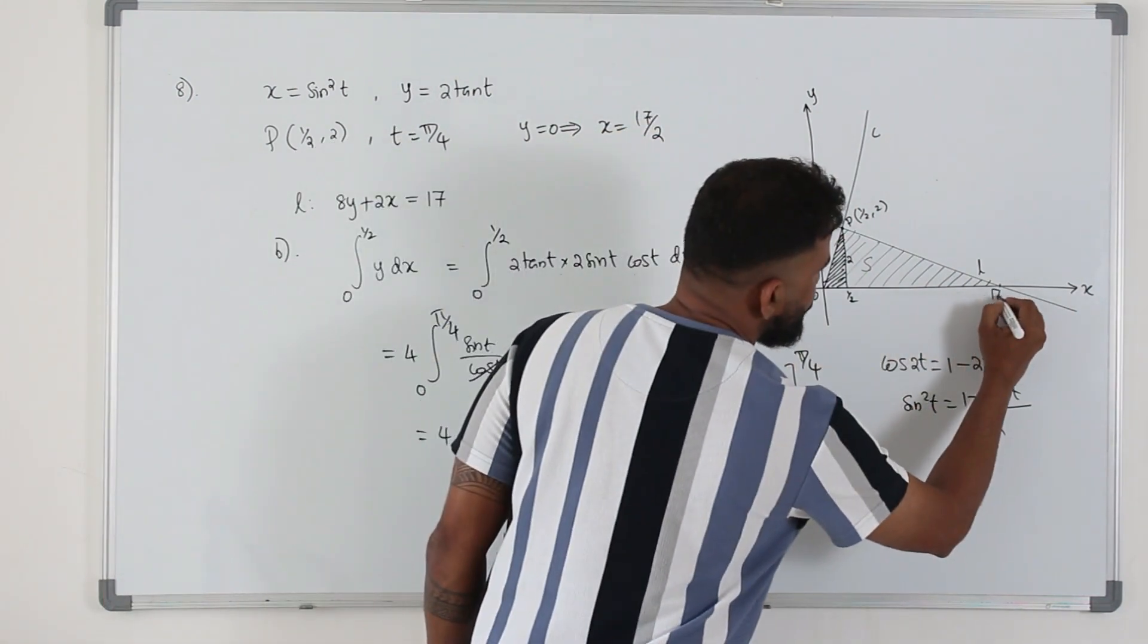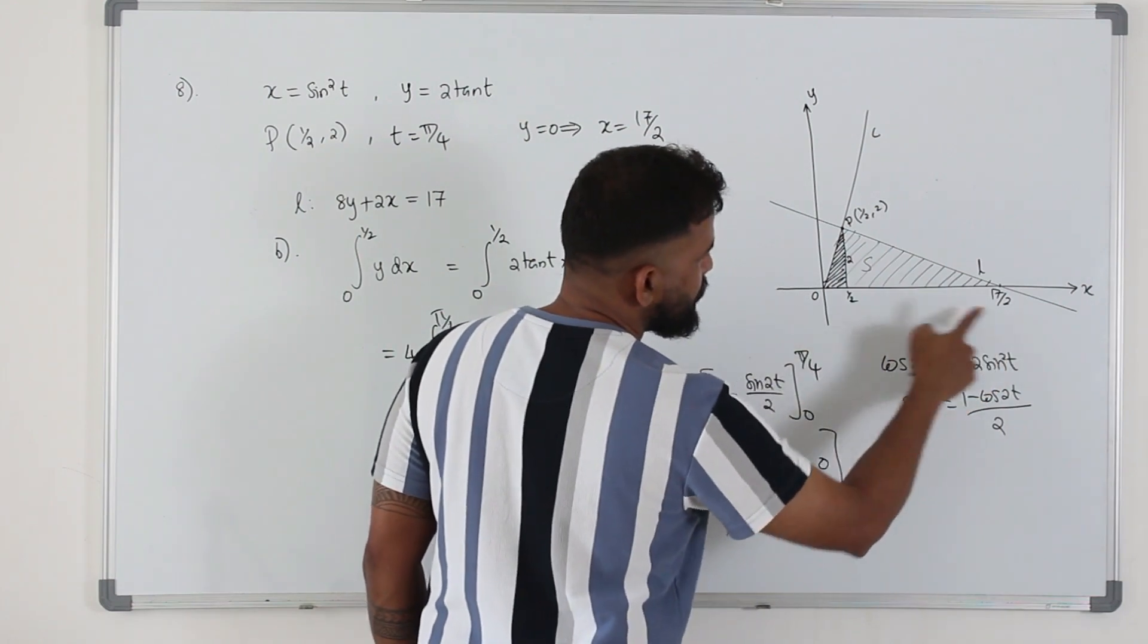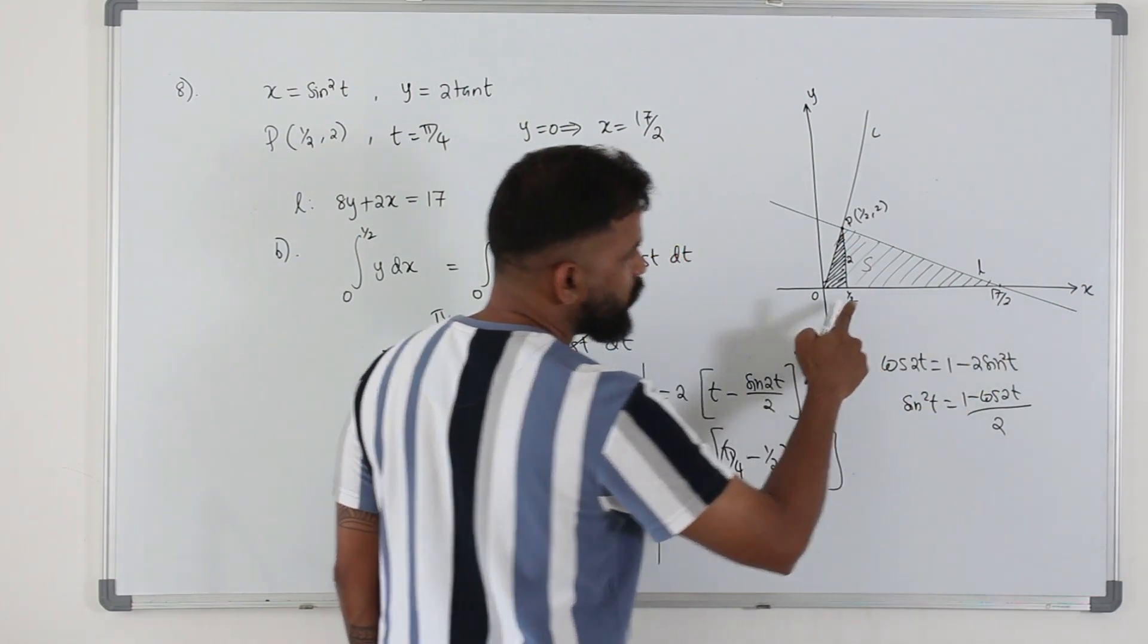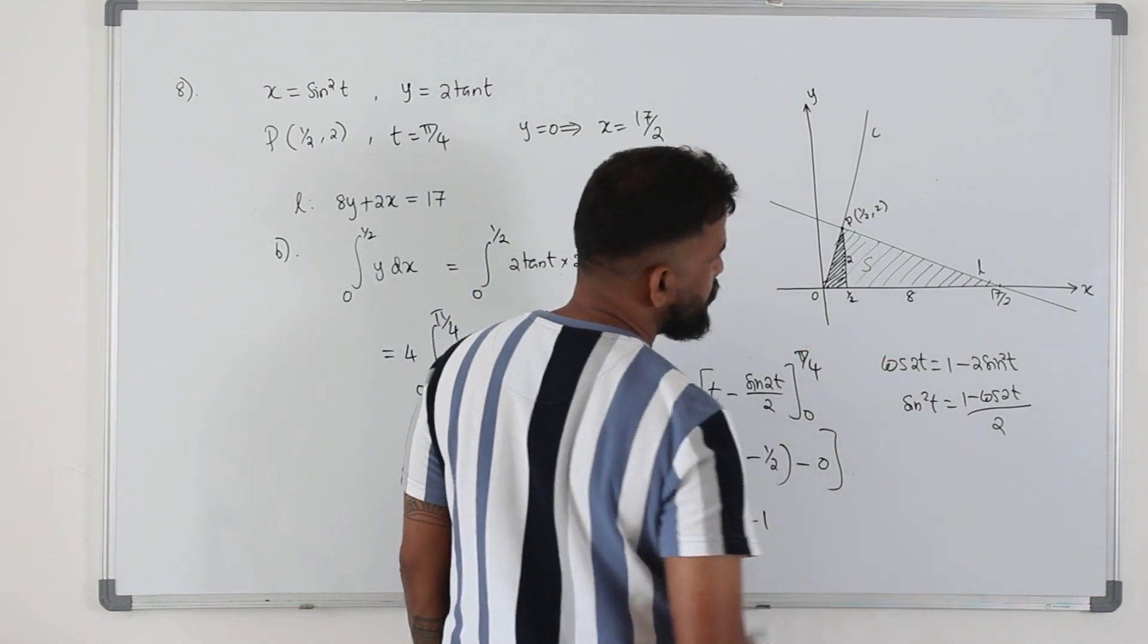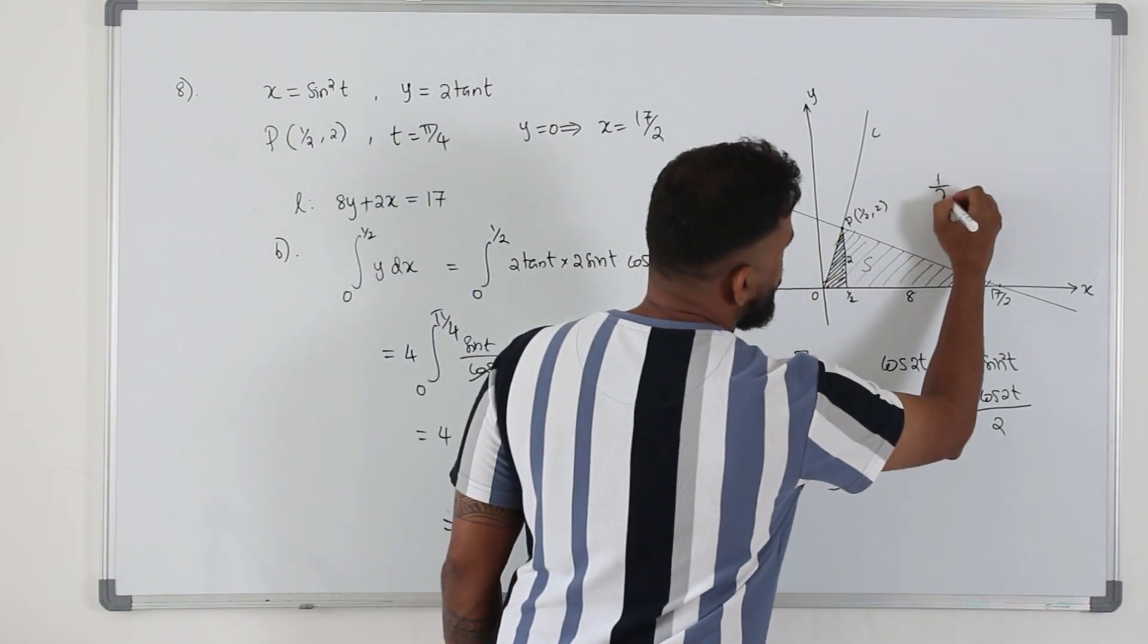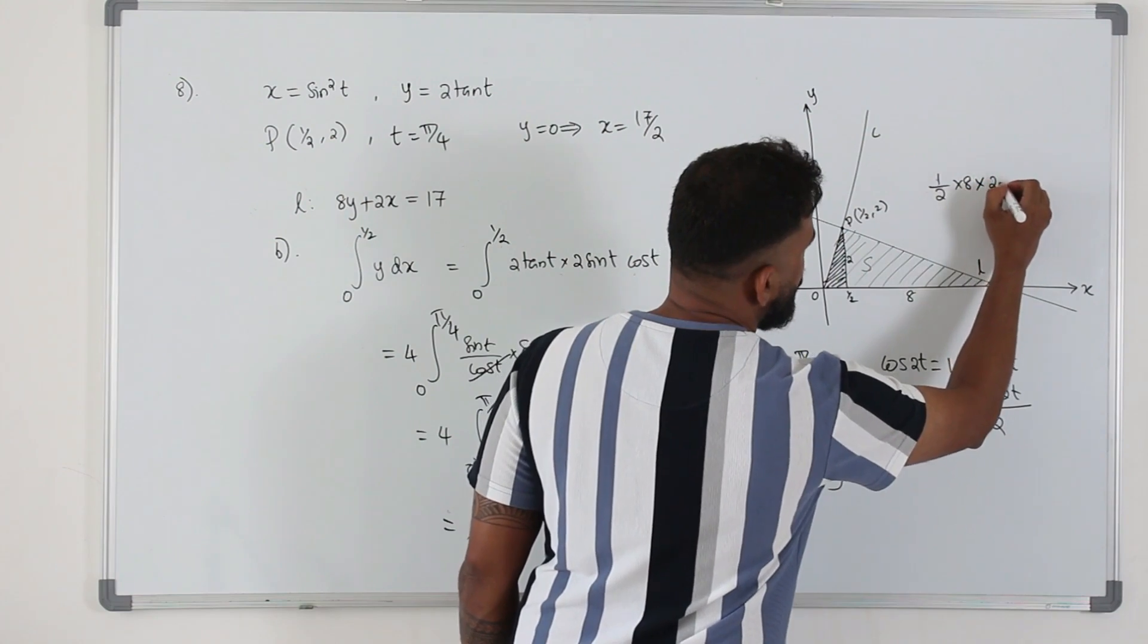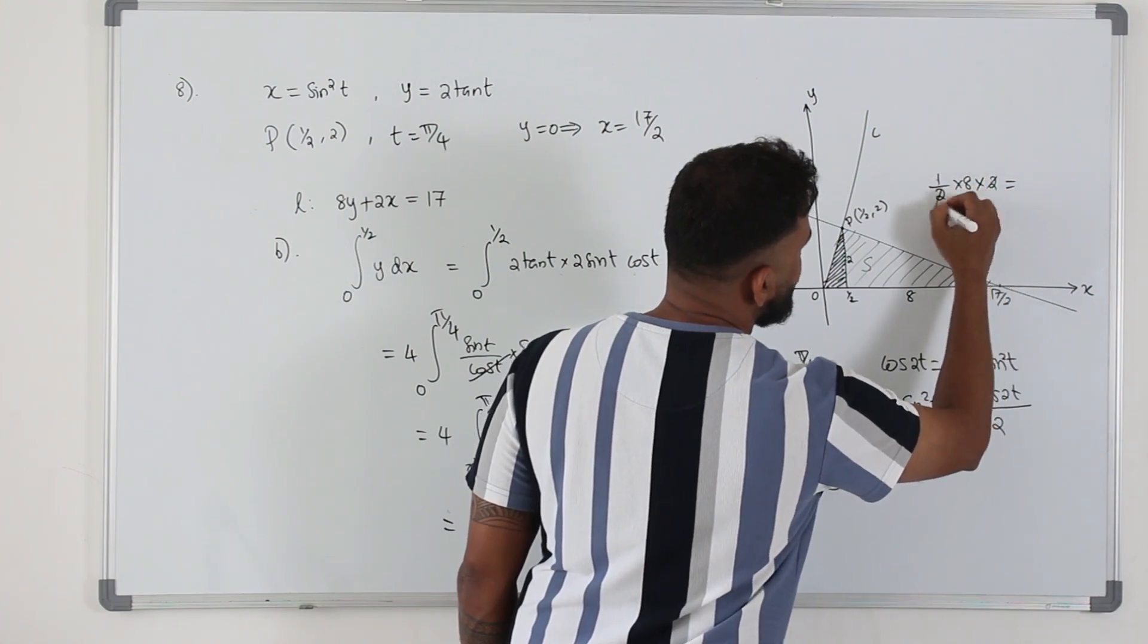So this point is 17 over 2. So the base is the difference between 17 over 2 and half: 17 over 2 minus half, which is 16 over 2, 8. So the area of the triangle is half base times height, which is 8.